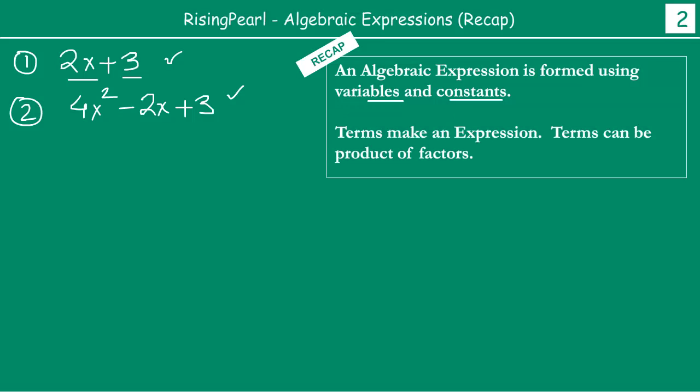Now notice one more thing. These terms actually make the expression. Like here 2x and 3 - both we call one term, one term. So this expression contains two terms. One term is 2x, another term is 3. In this example, this is one term 4x squared, this is your second term, this is your third term.